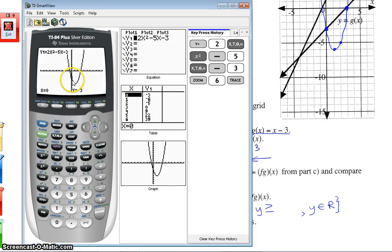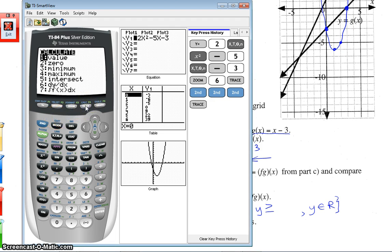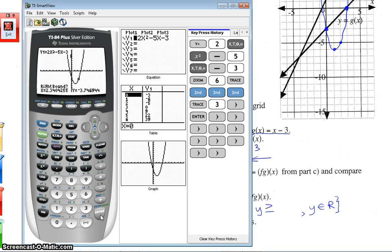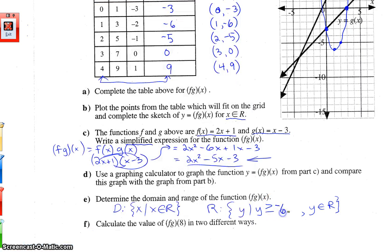So to find this vertex, it is the minimum point on this parabola. So we're going to go second, trace, and we want minimum, number three. Left bound means we need to be left of where we think this vertex is. We are left. We could be here as well. And then you hit enter. Right bound, we need to be right of where we think the vertex is. So we're going to cursor to the right, somewhere in there, hit enter. For guess, go ahead and hit enter. Now for range, we're concerned with the lowest y value, and in this case, it looks like it's negative 6.125 right there. So we are going to copy that in for our range, which y is greater than or equal to negative 6.125. And there we go.